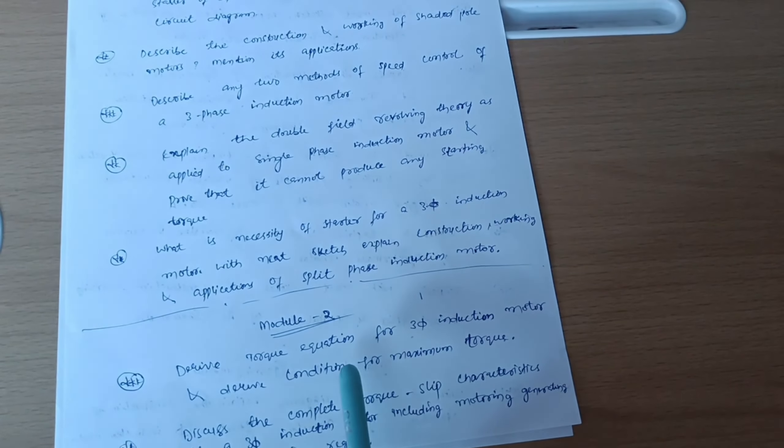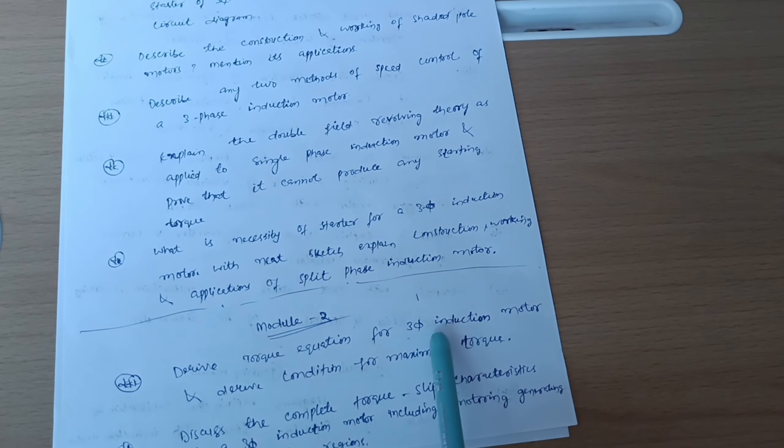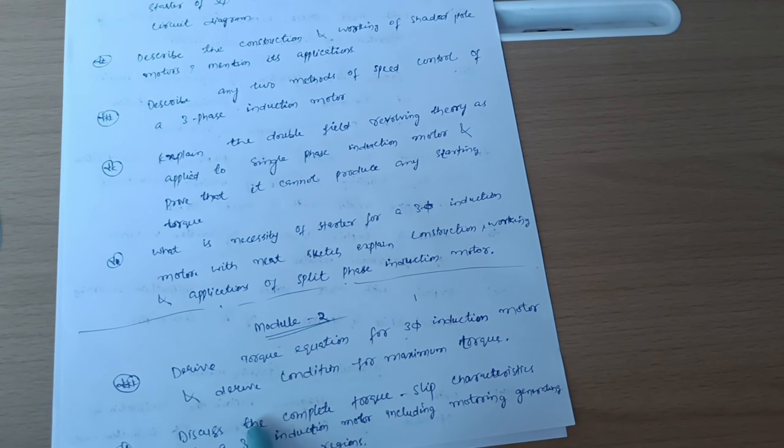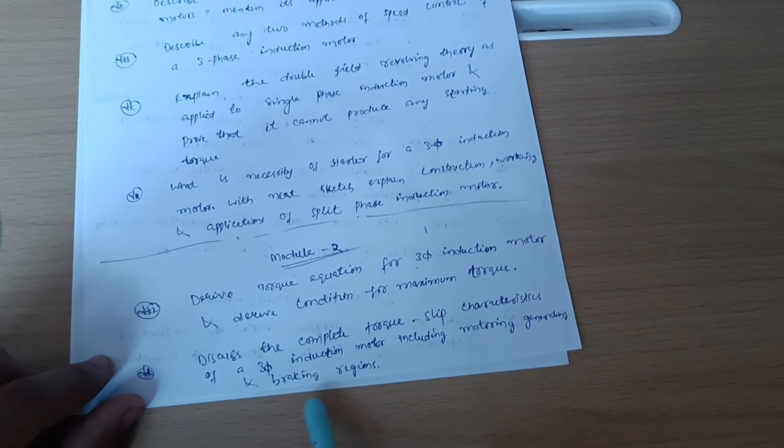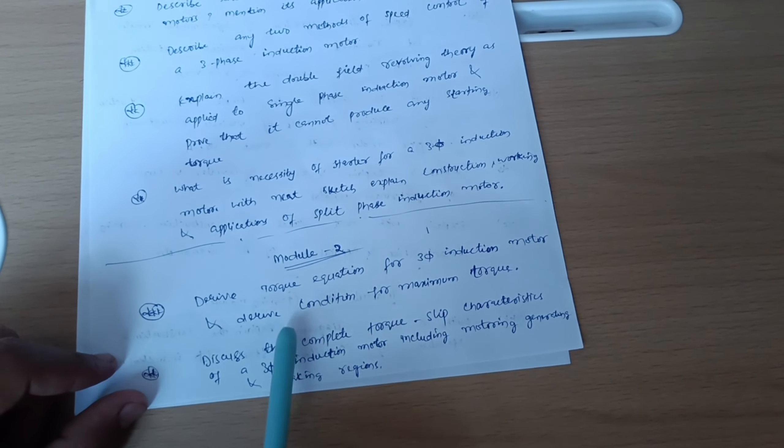Next is from Module 2 onwards, we have to practice some numericals and I will mention which papers you have to refer. First of all, let me discuss theoretical questions from Module 2: derive torque equation for three phase induction motor and derive condition for maximum torque. Discuss the complete torque-slip characteristics of three phase induction motor including motoring, generating, and braking regions. These are the two super important questions from Module 2.